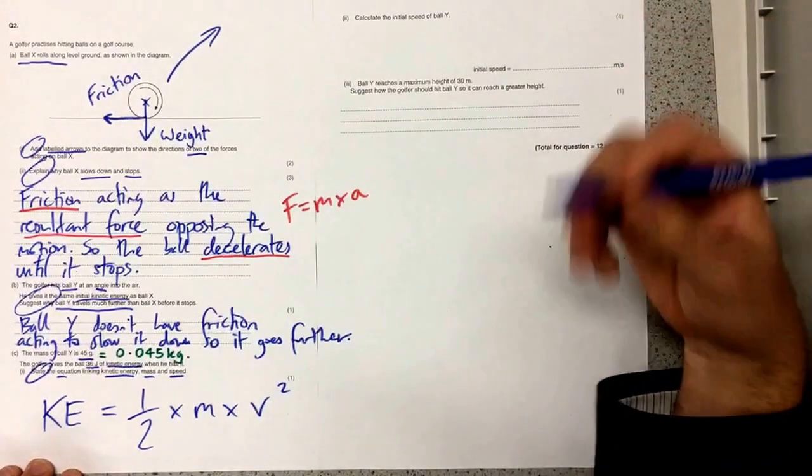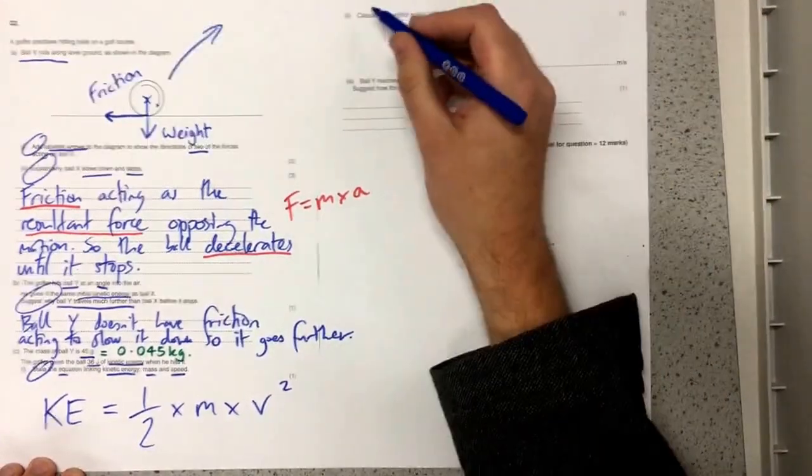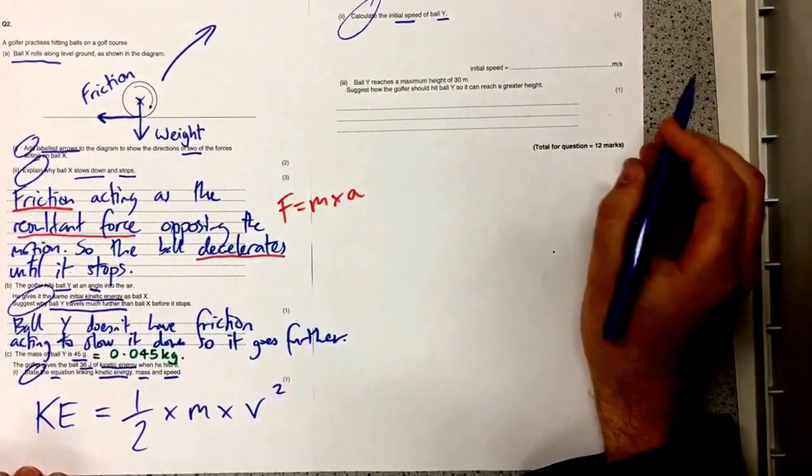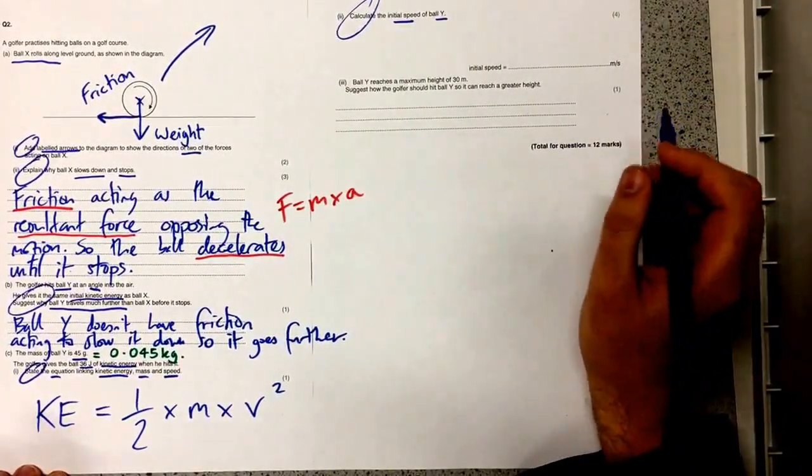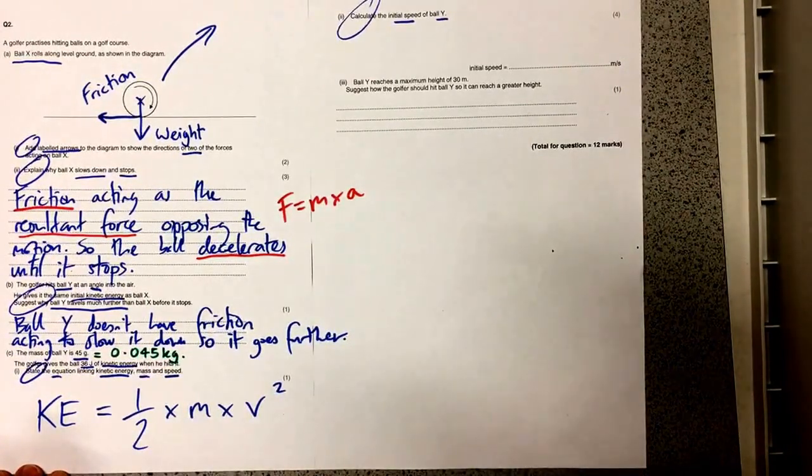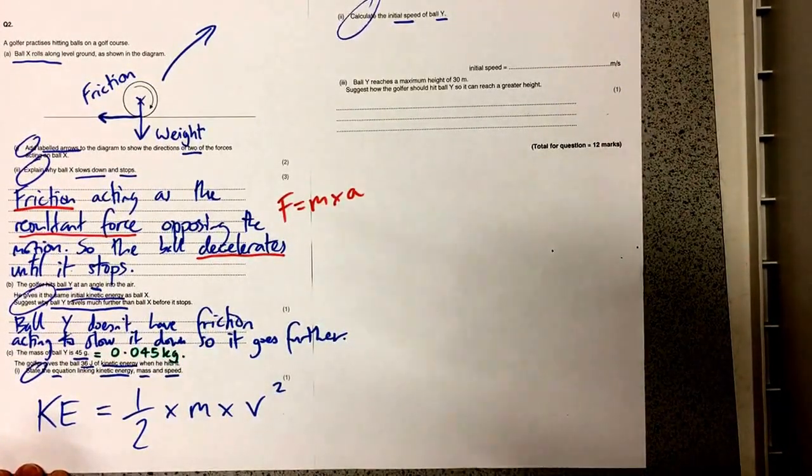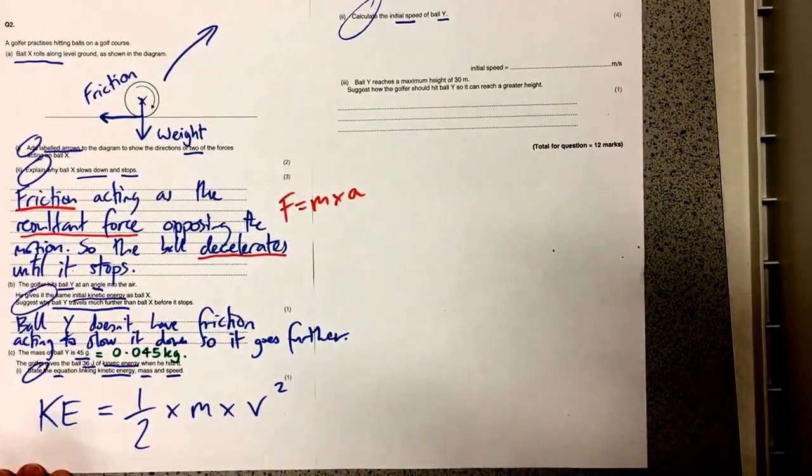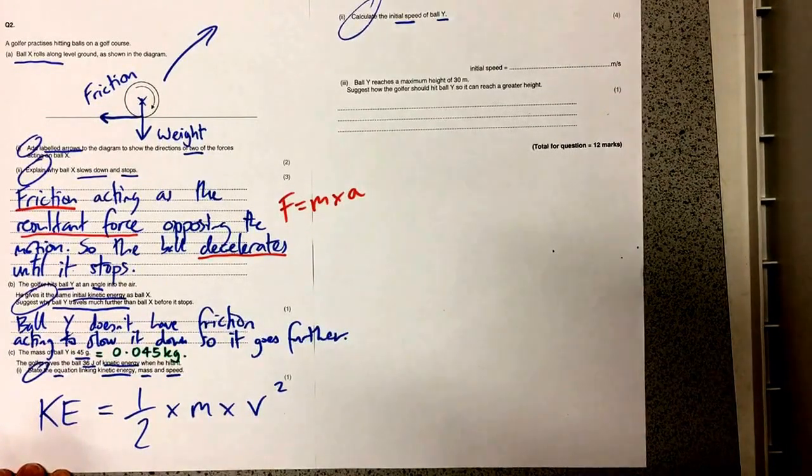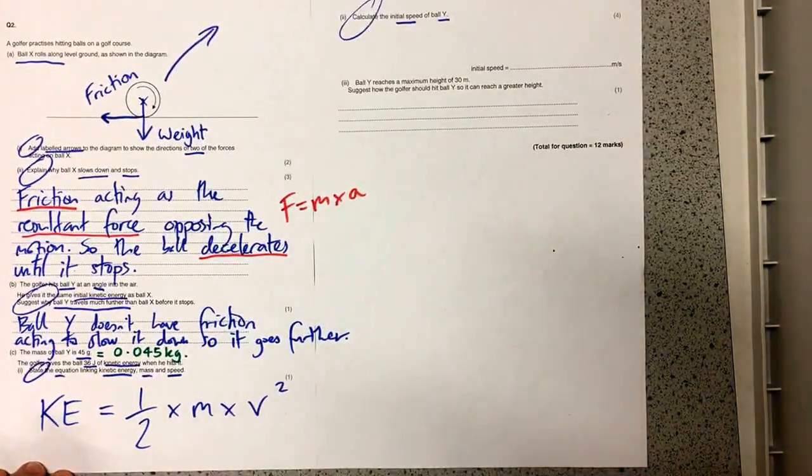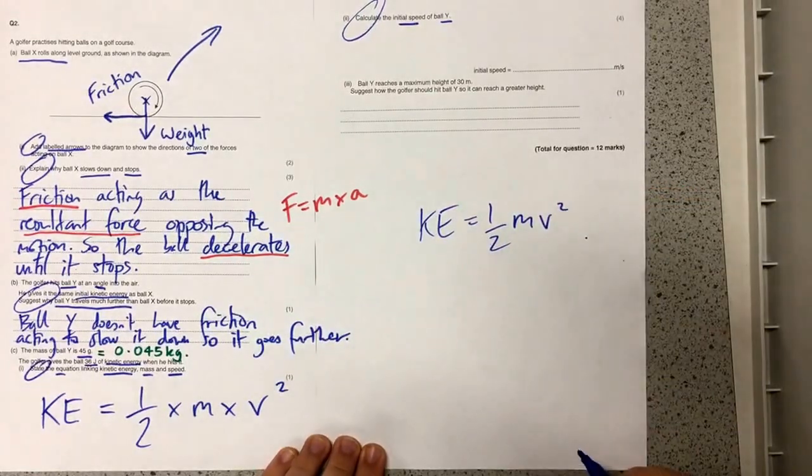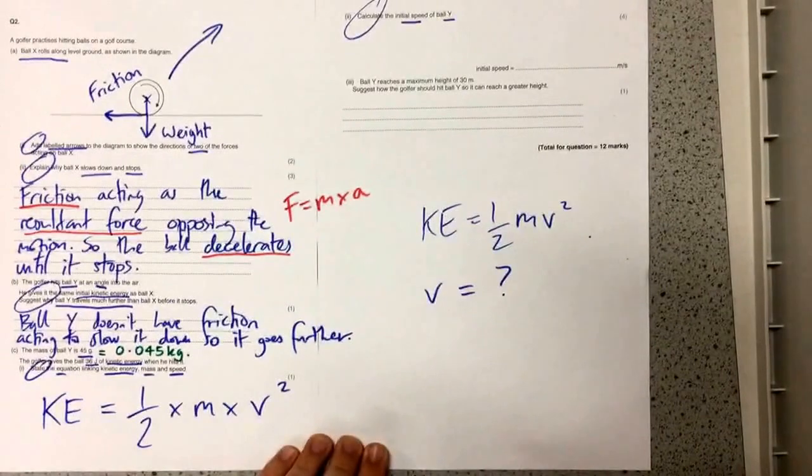Now whenever we're asked for an equation we're always asked to use it in the next part of the question. So this one is asking us to calculate the initial speed of ball Y. Now already I can see this is going to be a challenging question because it's giving me four marks. So that means there's going to be lots of pitfalls. Now the first pitfall I already identified when I noted that the mass was given to us in grams rather than kilograms. So I've already avoided that pitfall by converting it into kilograms. The second pitfall is that I'm being asked for an equation but it's not in the typical way that I would remember it. So I've got to rearrange the equation.